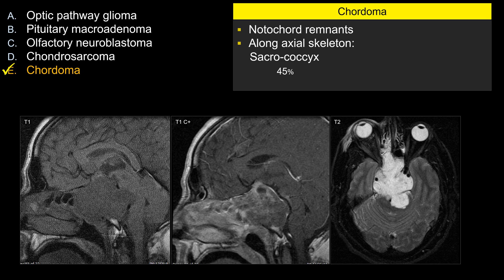The majority occur either at the top or the bottom. A higher percentage involves the sacral-coccyx region at the bottom, followed by the sphenooccipital region at the top — like in this case. Anywhere along the vertebral body accounts for about 20%. The sacral ones tend to occur in older patients, while the sphenooccipital synchondrosis or clivus lesions tend to occur in younger patients.